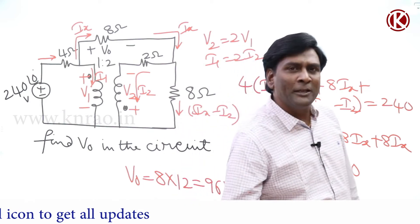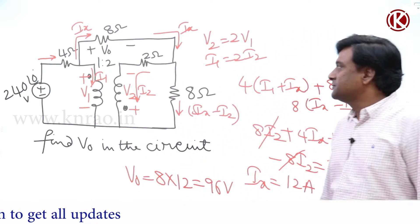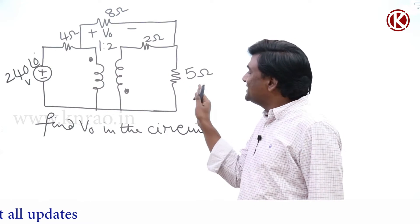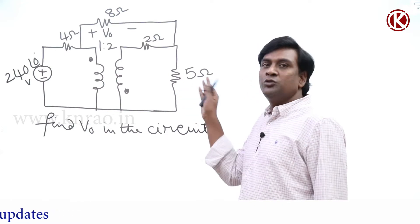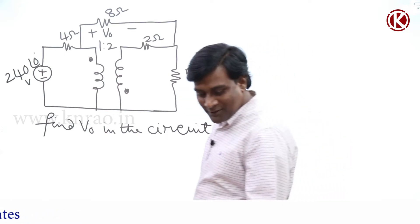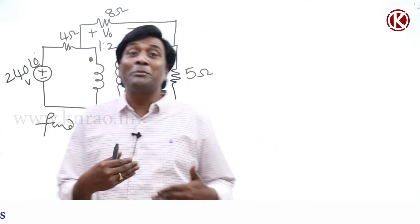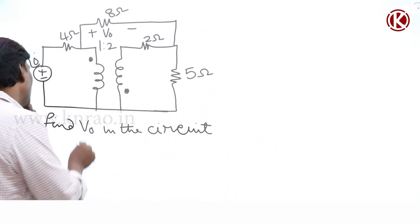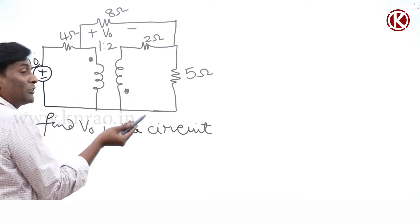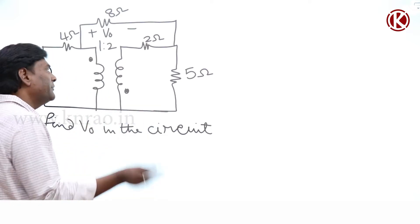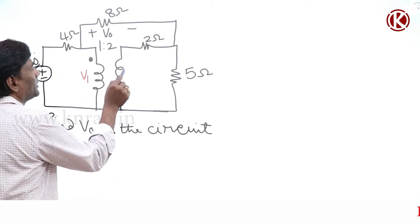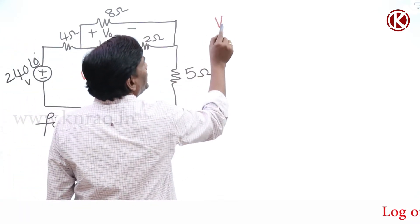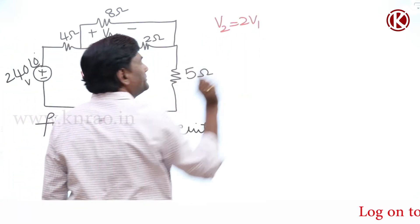Now let me take the same problem and change the 8-ohm resistor to 5 ohms, and see the complexity level. Same question, everything else is the same. As usual, we follow the same approach. This is V1, this is V2. Since the turns ratio is 1:2, V2 equals 2 times V1. This dot is plus, and whenever this dot is plus, the other dot is also plus.